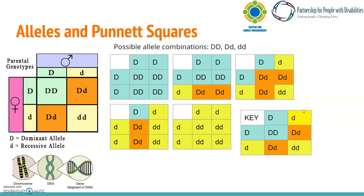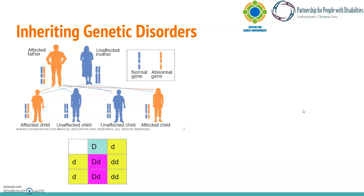This allows us to understand how genetic disorders are passed on or inherited within a family. On the left, we are looking at an example of one of the Punnett squares from the previous slide, but in a visual format. We see that the mother has two unaffected alleles, while the father has one unaffected allele and one affected allele, shown in orange.